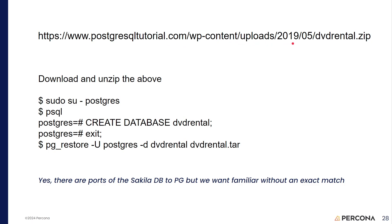You can get it from this URL: postgrestutorial.com/wp-content/uploads/2019/05/dvdrental.zip. Believe it or not, at one time if you wanted to watch a movie that was not on broadcast TV, you went to a store and rented video cassettes or later DVDs — it wasn't on streaming services. This is like the Sakila database, the data for a store that runs that type of business.